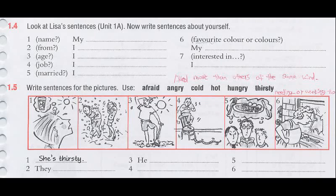Exercise 1.5: Write sentences for the pictures using: afraid, angry, cold, hot, hungry, thirsty. 1. She is thirsty. 2. They're cold. 3. He is hot. 4. He is afraid. 5. They're hungry. 6. She is angry.